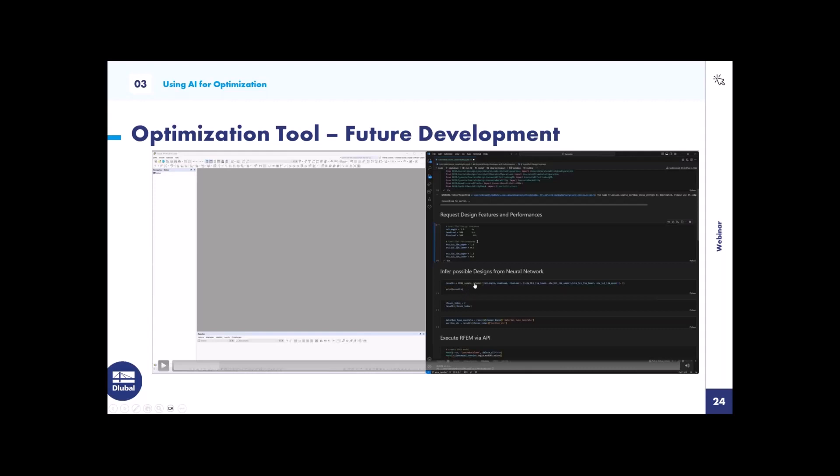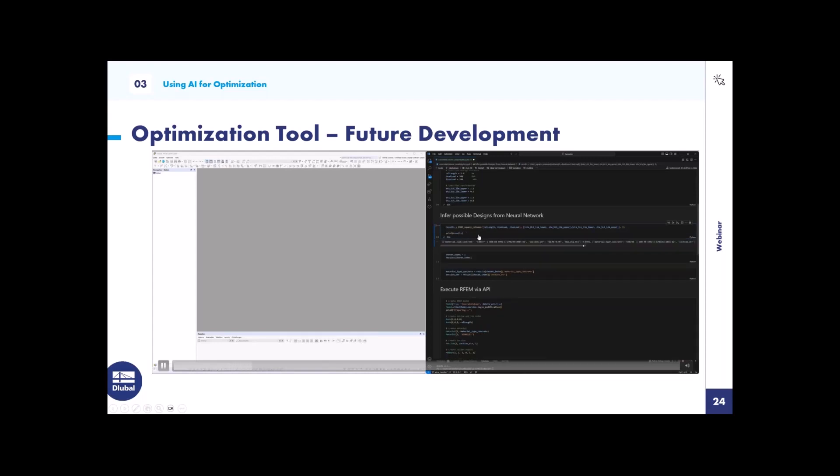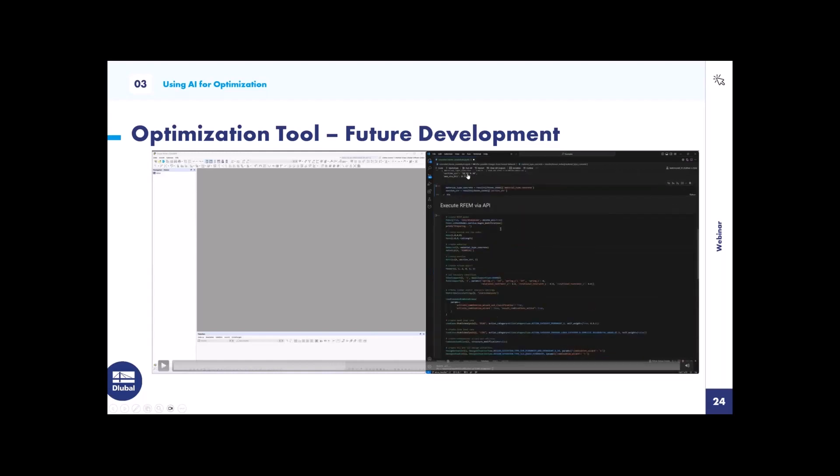Then we have this generative neural network. You hand over these requests to that, and then it will generate, you saw that it's really quick, a set of options what you have in order to fulfill these criteria. Now you can choose out of this set of options. I will choose the first one because that has the highest utilization. You can check, we take a concrete C30/37 with 30 centimeter square rectangle cross section. With that material and section choice, we go and compute the FEM model. Because in the end, I think we want to show that this AI prediction really holds true.